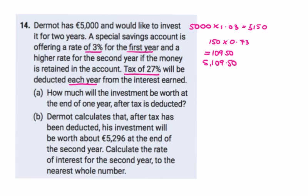Dermis calculates that after tax has been deducted, his investment will be worth €5,109.50 at the end of year one. After tax has been deducted at the end of year two, it will be worth €5,296 exactly. So we're looking for the rate of interest for the second year. If we take €5,296 minus €5,109.50, we see how much it has gone up by — that gives us €186.50.